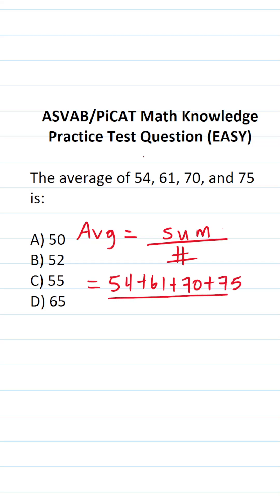How many numbers did we add together? That's 1, 2, 3, 4. So by doing this arithmetic right here, we'll have our average. I like to do addition vertically, so I'm going to do it off to the side like so: 54, 61, 70, and 75.